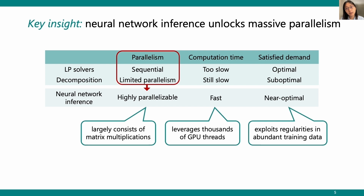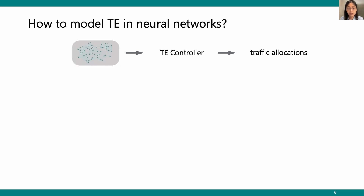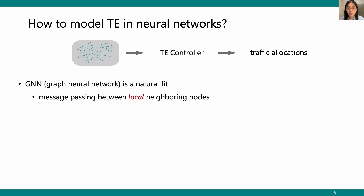Neural network inference can also achieve near-optimal solutions by exploiting regularity in abundant training data. However, using neural network inference for TE is challenging. For the input, how do we model the TE problem with neural networks? Graph neural networks, or GNNs, are a natural fit for such graph-structured problems — they do message passing between local neighboring nodes to learn graph features. However, GNNs miss a global view for traffic flows when the source and destination are far apart.